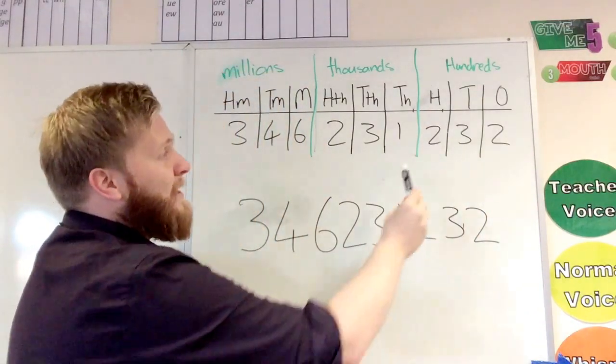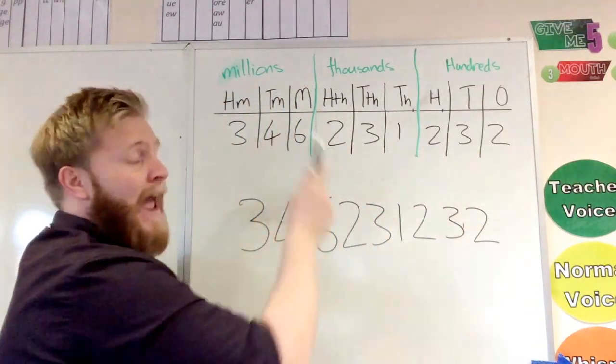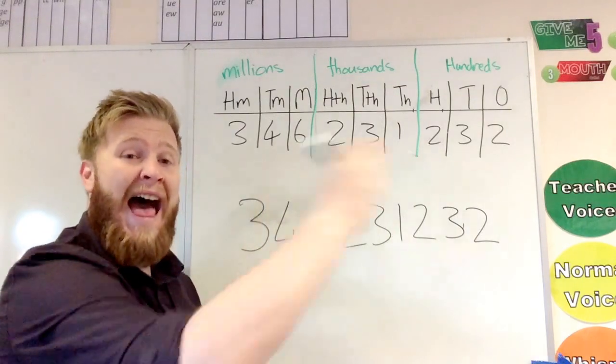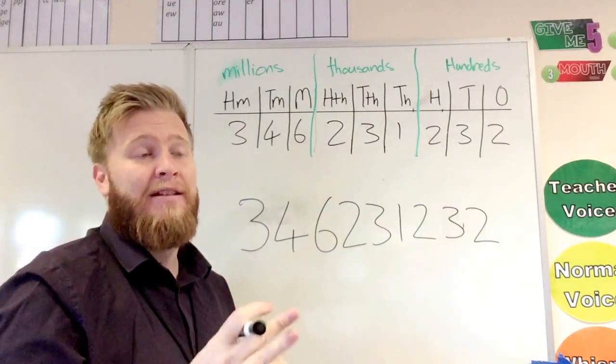Okay, so I'll put that all together: 346,231,232. That means if I can read any three digit number, I can read any number up to 100 million and beyond. So it makes it much easier if you break it into three.